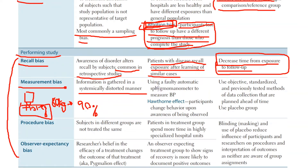Their example is a faulty automatic sphygmomanometer — it might constantly give faulty results. Whether or not they're reliable, you're gathering information from each patient in a wrong, invalid manner.